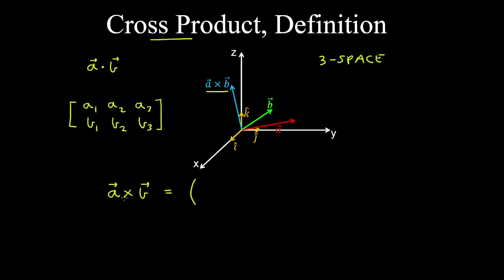For example, to get the first component of the cross product, we'll remove column 1 and take the determinant of the resulting matrix in columns 2 and 3. So we have a2, a3, b2, b3 being the entries of that matrix.